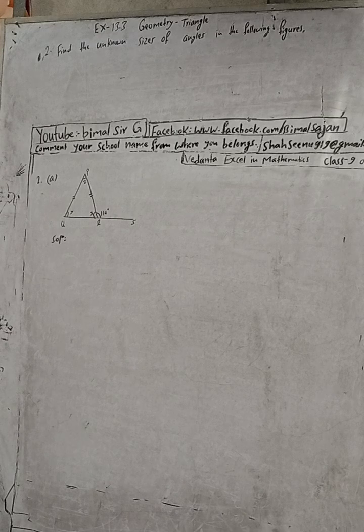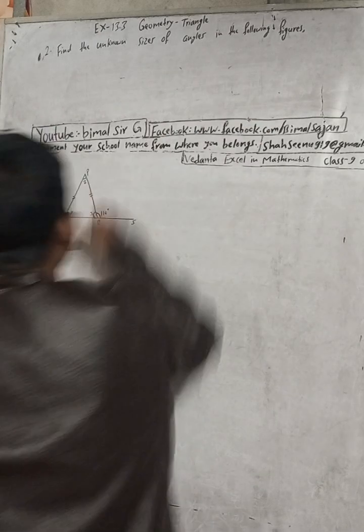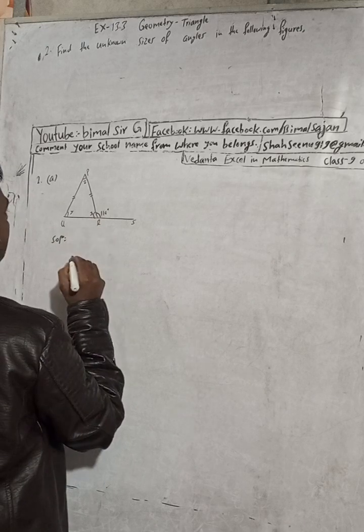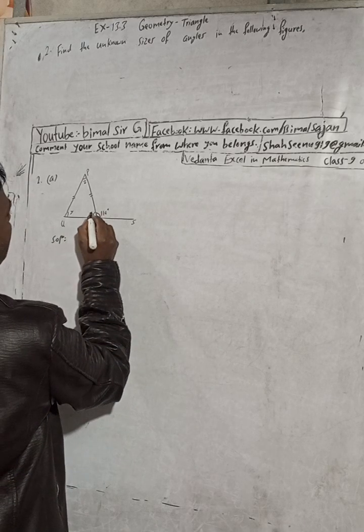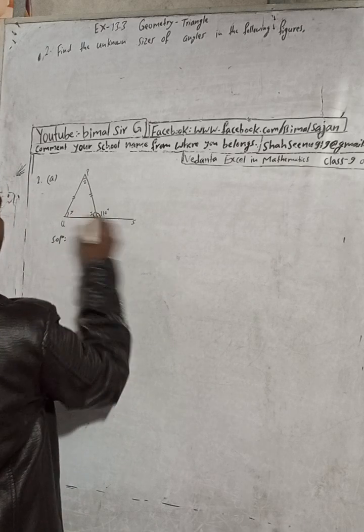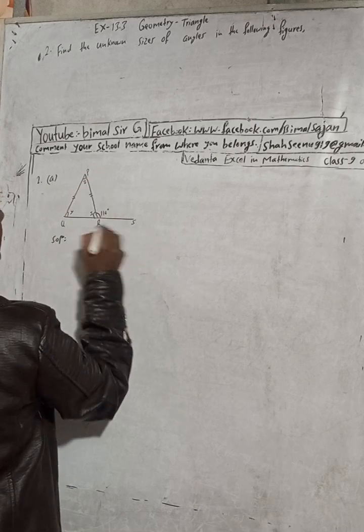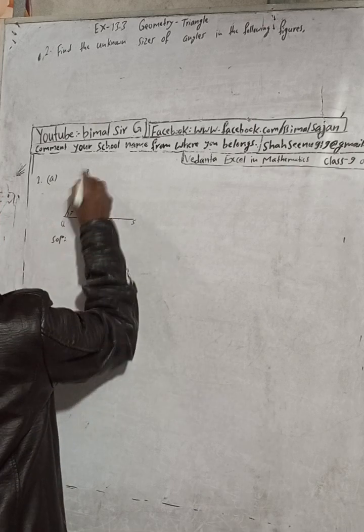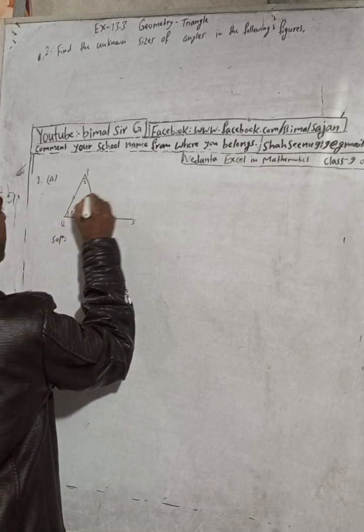The question is find the unknown size of angle in the following figures. This is the figure. We can see here this is x, this is the triangle, this is PQR. You can see this is y and this is x, this is P, and this is the symbol for isosceles triangle.